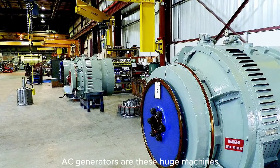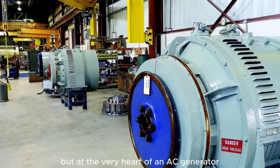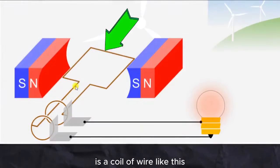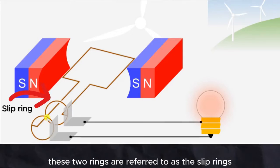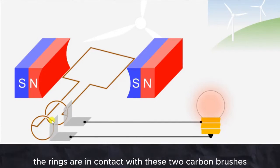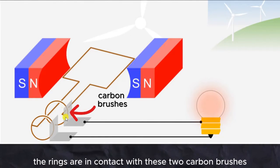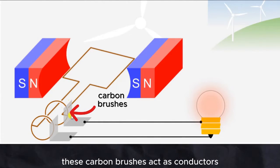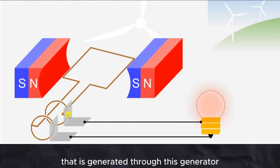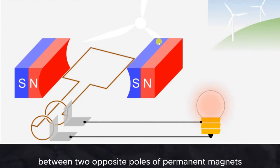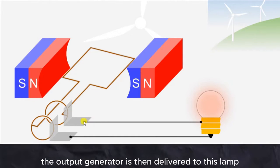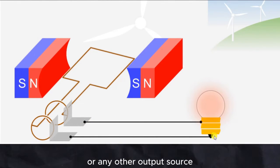AC generators are huge machines, but the very heart of an AC generator is a rectangular coil of wire like this, and it has two rings attached to it. These two rings are referred to as the slip rings. The rings are in contact with two carbon brushes, which act as conductors and conduct the electric current generated. This coil of wire is placed between two opposite poles of permanent magnets, and the output is delivered to a lamp or any other output source.